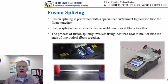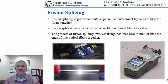We are now turning our attention to fusion splicing. To perform fusion splicing, you need a specialized instrument called a splicer, used to fuse fibers together. Fusion splicers use an electric arc to weld two optical fibers together. The process involves using localized heat to melt or fuse the two ends of the fibers together. This slide shows pictures of fusion splicers, as well as the actual process where a high electric arc melts the glass and establishes the permanent connection.